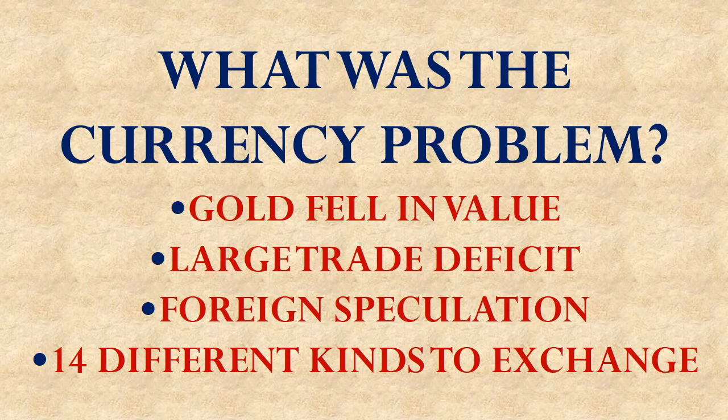Second question: what was the currency problem among the Articles of Confederation? Was it that gold fell in value, that they had a large trade deficit, that there was foreign speculation about the value of these currencies, or that there were 14 different kinds of money that they had to exchange all the time? The answer is that there were 14 different kinds of money, which just made doing business very difficult.